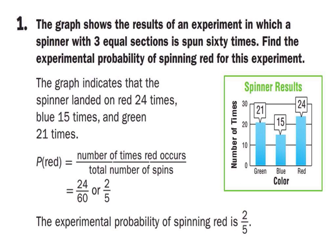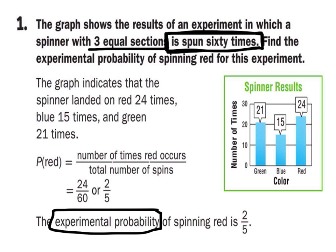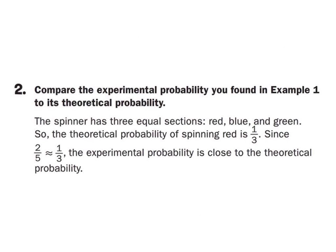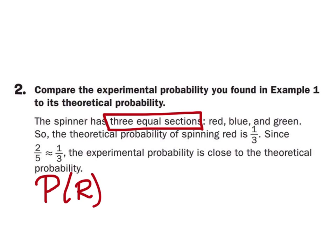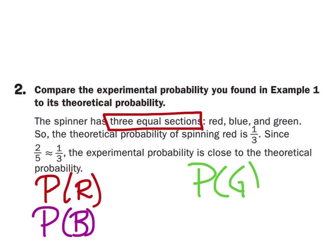Here's an example: a spinner has three equal sections and is actually spun 60 times. Would this be experimental or theoretical? Because it actually was spun 60 times, this is experimental probability. For number two, what is the theoretical probability? Since it was split into three equal sections, the probability of red is one-third, the probability of blue is one-third, and the probability of green is one-third — all of these are one-third.